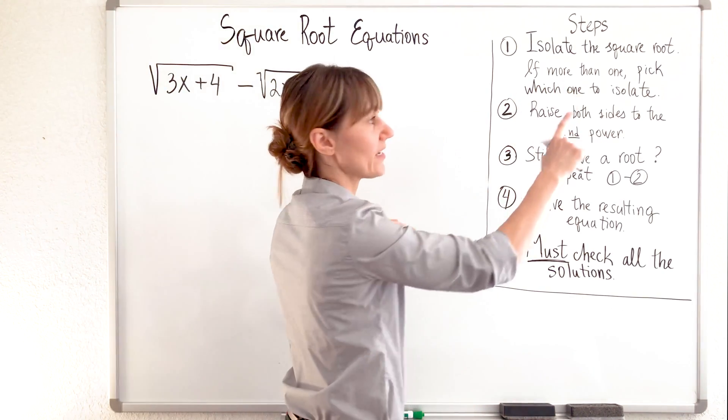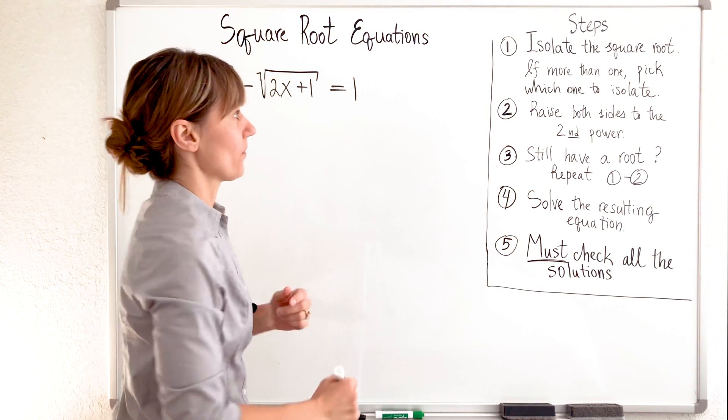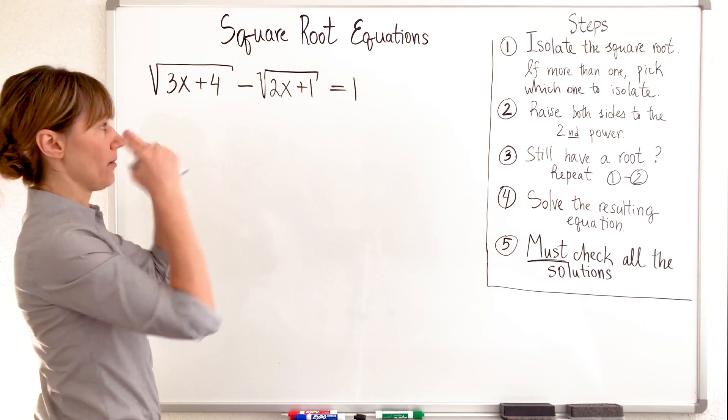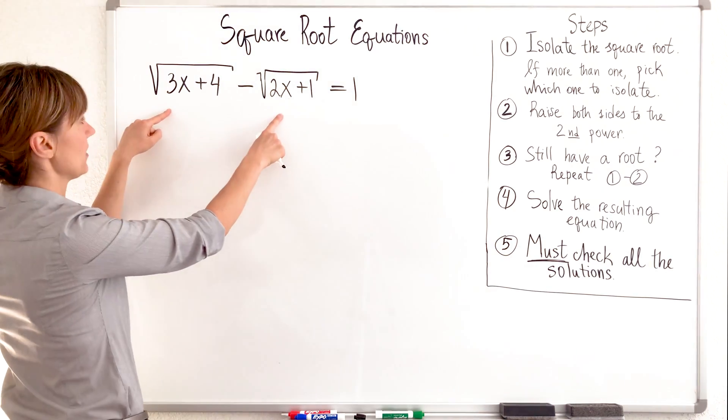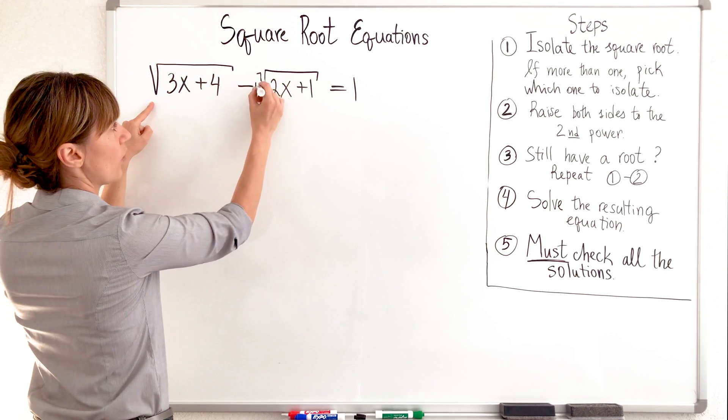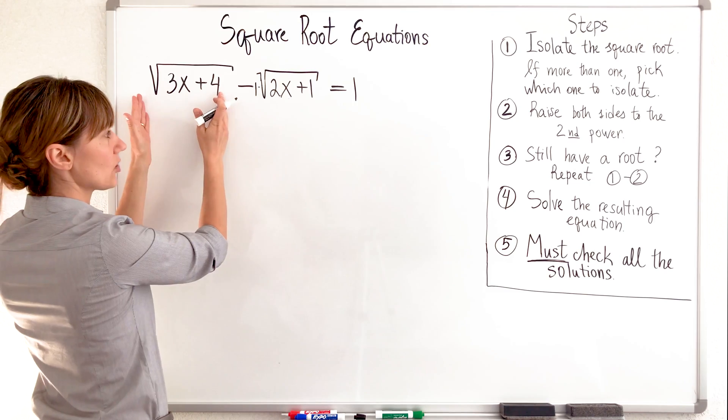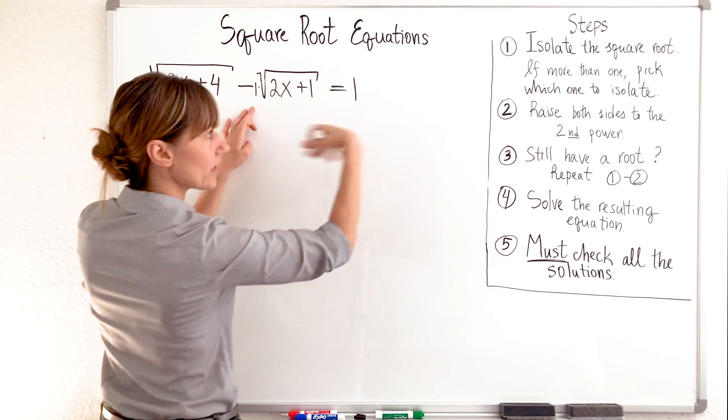So, the first step is to isolate the square root. If more than one, we have to pick which one to isolate. My eyes are on the board. Which one to isolate? This comes positive. This has like negative one times. Definitely not this one. So, I'm going to isolate this square root and move this square root on the other side by adding it to both sides.